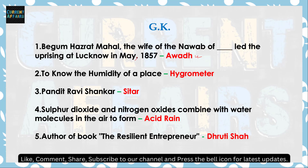Next: to know the humidity of a place — एक place का humidity measure करने के लिए hygrometer use करते हैं। Next: पंडित रवि शंकर — ये relate हैं सितार से, सितार वादक हैं। Next: Sulfur Dioxide और Nitrogen Oxide combine with water molecules in the air to form — यानि acid rain बनती है। Nitrogen Oxide और Sulfur Oxide दोनों water के साथ मिलकर acid rain बनाते हैं।